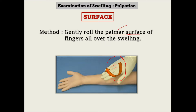The surface can be felt by your fingers as smooth or irregular. Sometimes, especially in cases of large swellings, you may get a mixed pattern where at some part the surface is smooth while at some other part it is irregular. That is the reason why you should roll your fingers all over the swelling.